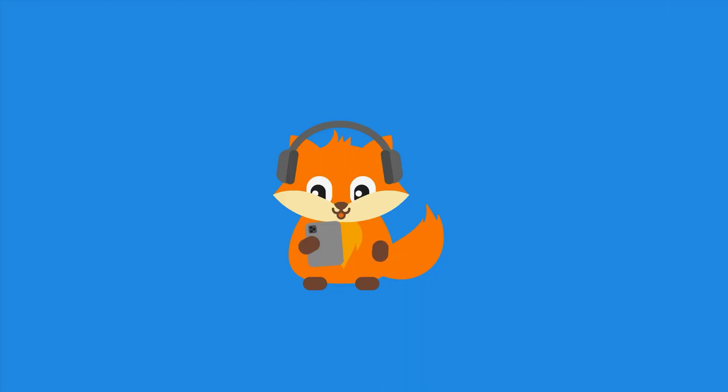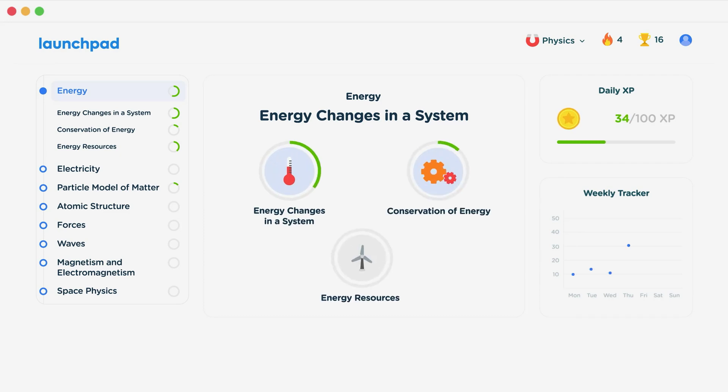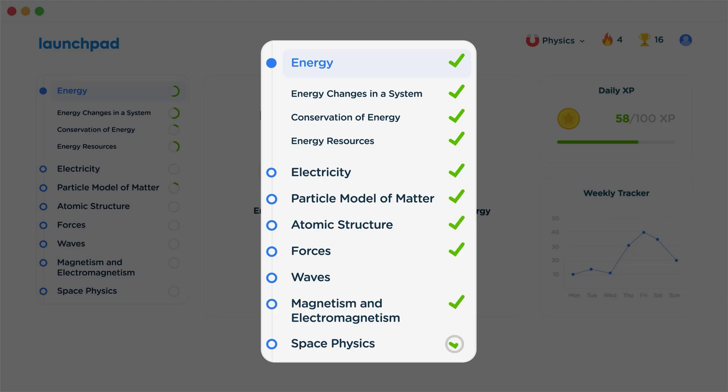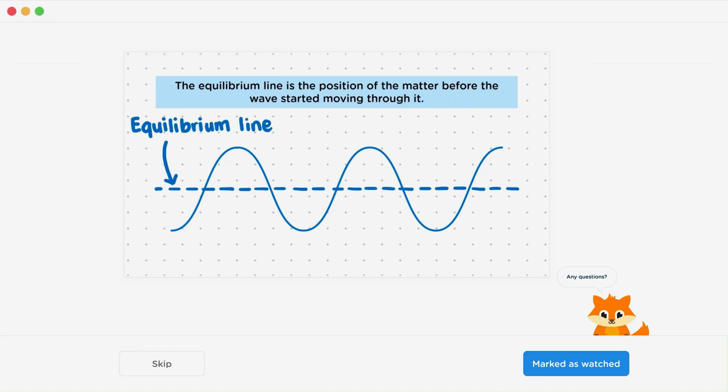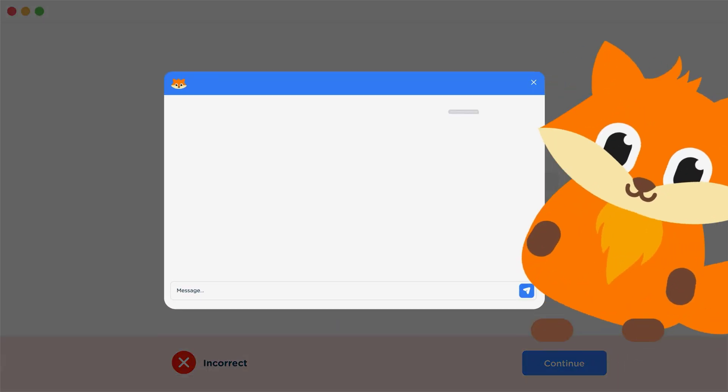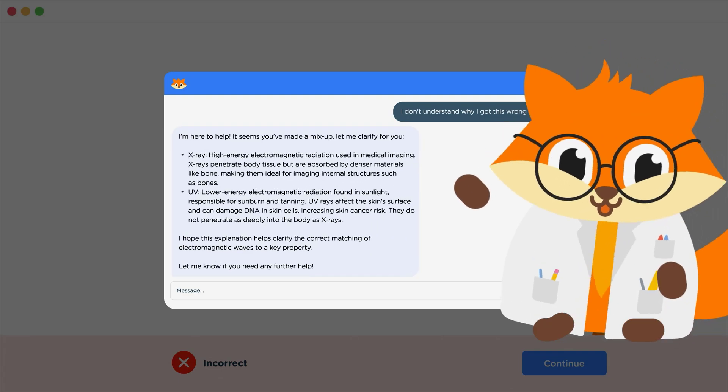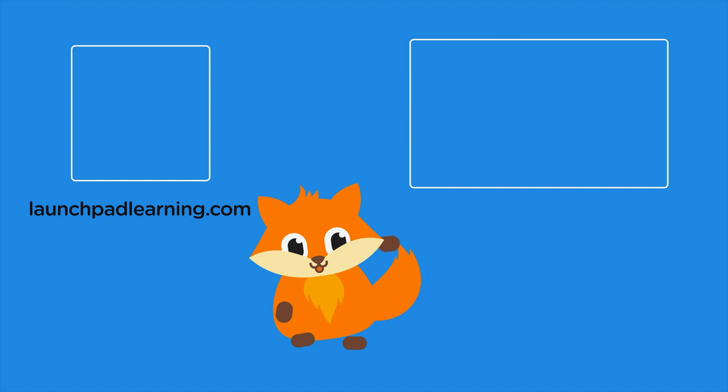Thanks for watching. If you want to take your GCSE revision to the next level, head over to launchpadlearning.com and check out our smart learning platform that's been designed to get you top results in your exams. We cover your whole specification and make revision fun with interactive quizzes, easy to follow videos and more. You'll be kept motivated by your own AI tutor who's here to support you every step of the way. To check it out for yourself, click here. Or click here to keep watching a selection of the videos from our full GCSE physics course. See you there!